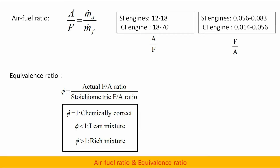Air-fuel ratio is the ratio of mass flow rate of air to mass flow rate of fuel. In SI engines, the value ranges from 12 to 18, and in CI engines the value ranges from 18 to 70. Sometimes it can also be expressed as fuel-air ratio, which is the reciprocal of these values. Observe closely that the equivalence ratio φ = actual fuel-air ratio / stoichiometric fuel-air ratio — note this uses fuel-air ratio, not air-fuel ratio.